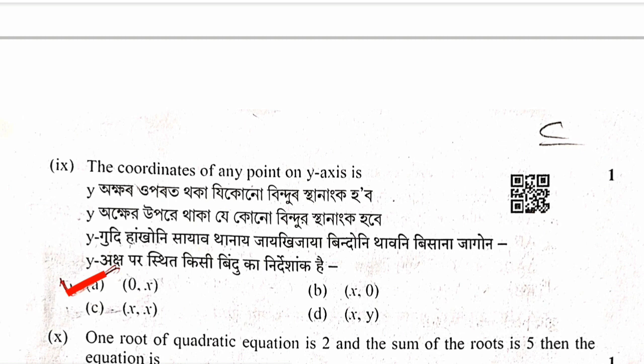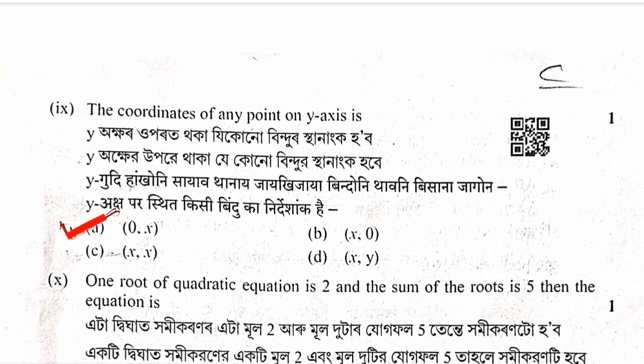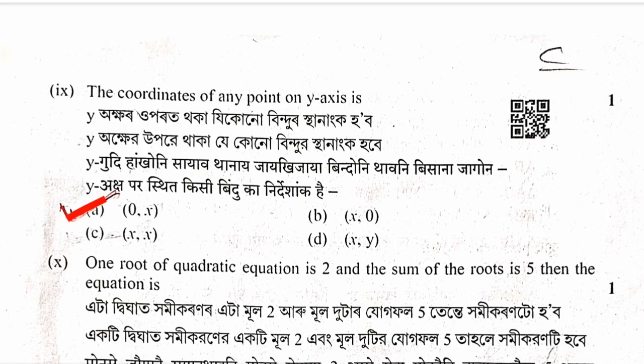Ninth question: The coordinate of any point on the y-axis. Since any point on the y-axis has x-coordinate zero, the answer is zero comma y. Option B is correct.